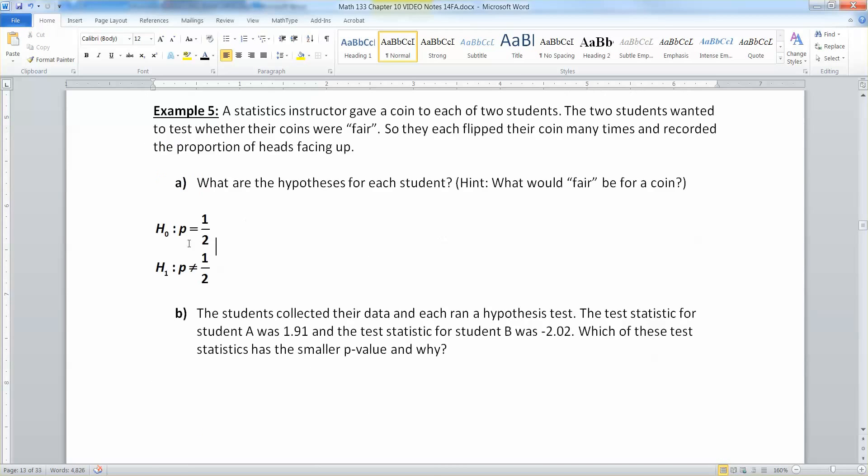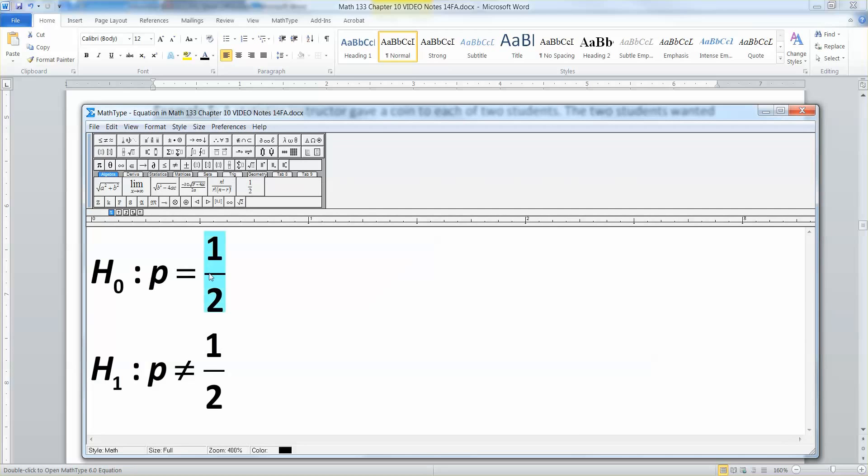So that would be fair, not fair. So you assume the dice are fair, unless you can prove it otherwise. And if you'd like, you could put 0.5 in here instead of a half. It doesn't really make any difference.